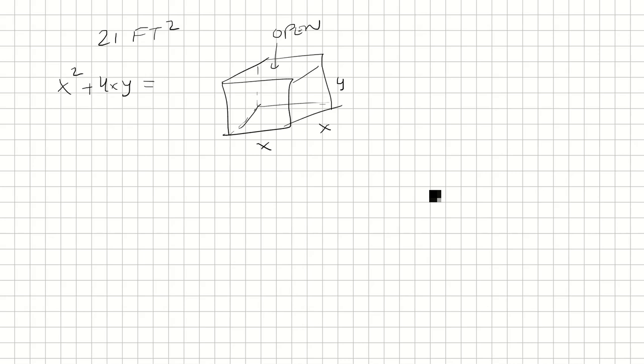So this is equal to 21, and the volume is equal to x squared y. So from the x squared plus 4xy equals 21, we can solve for y. So first we'll subtract by x squared, and then we'll divide both sides by 4x.